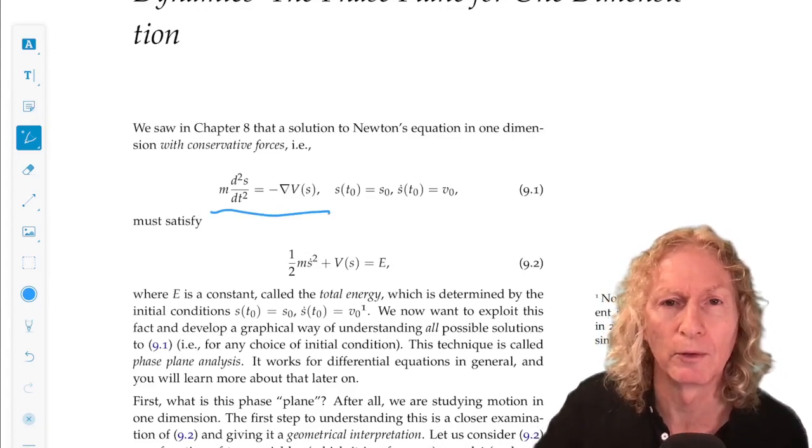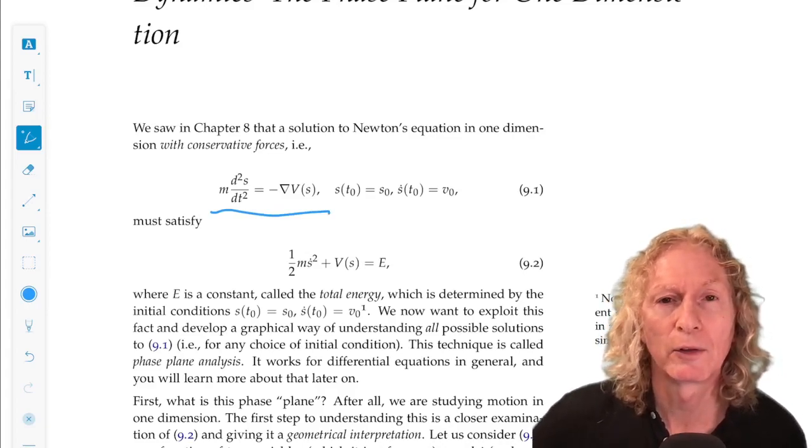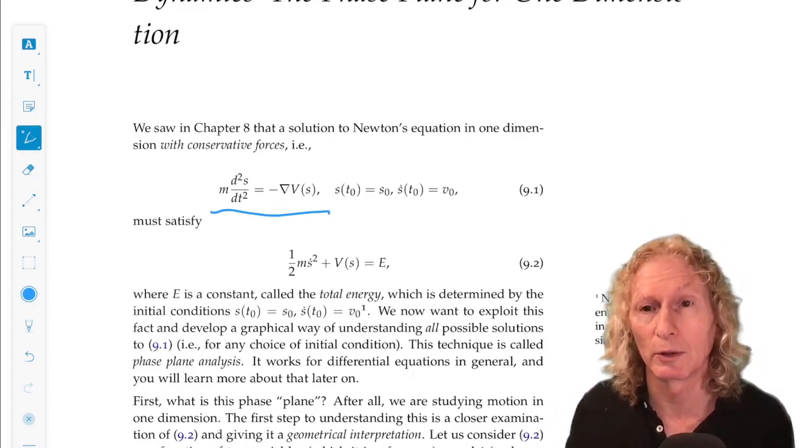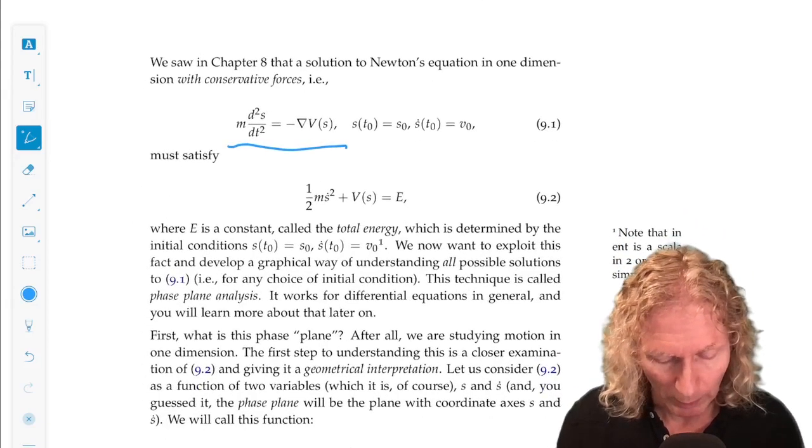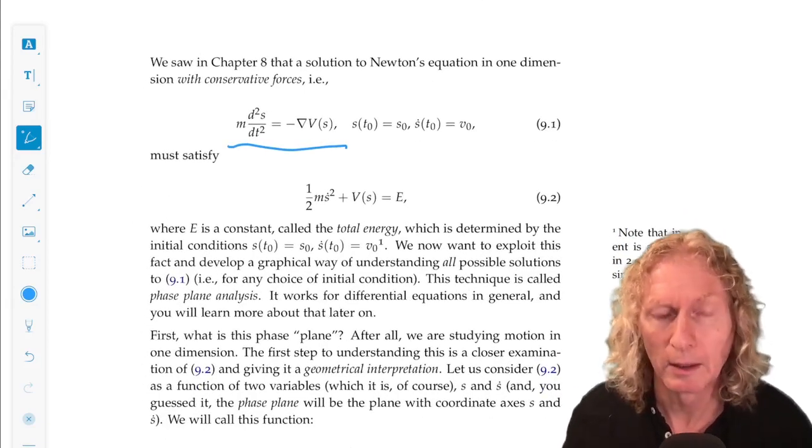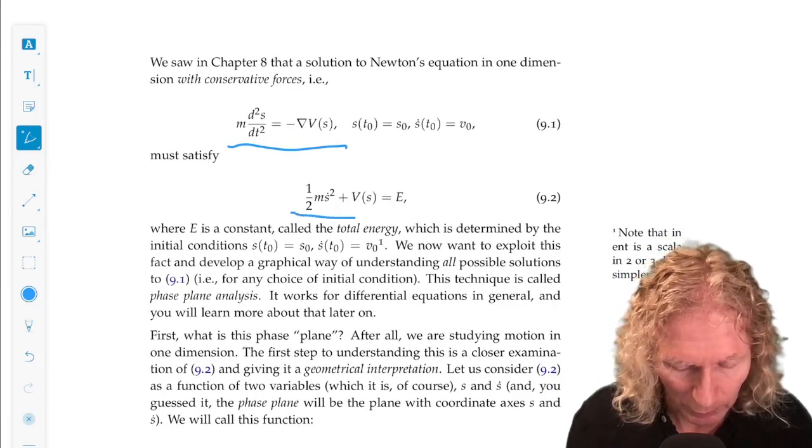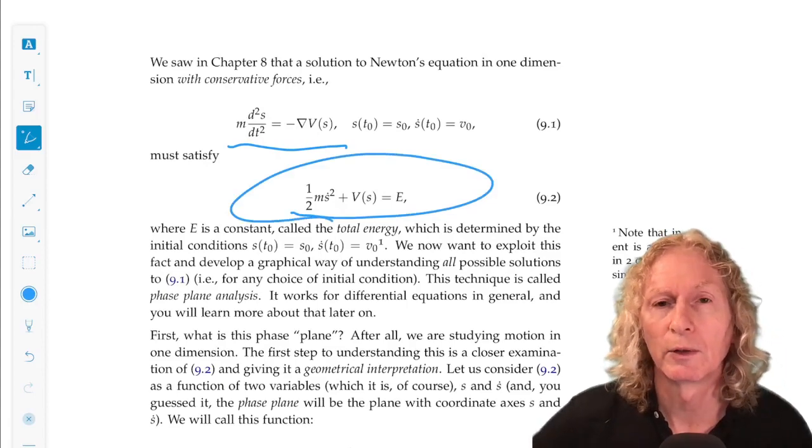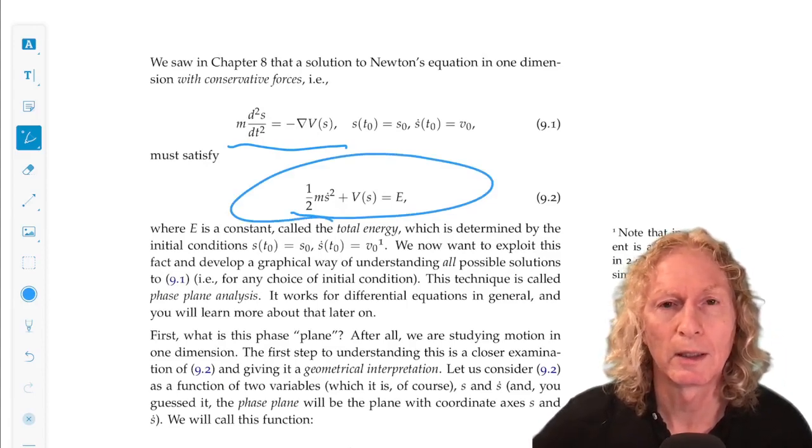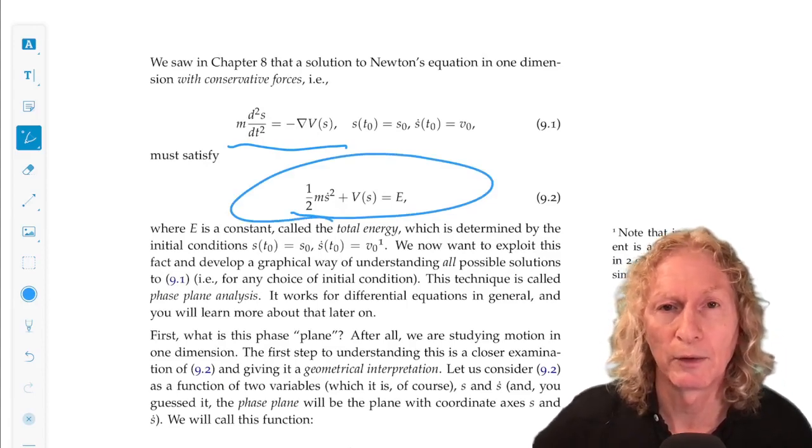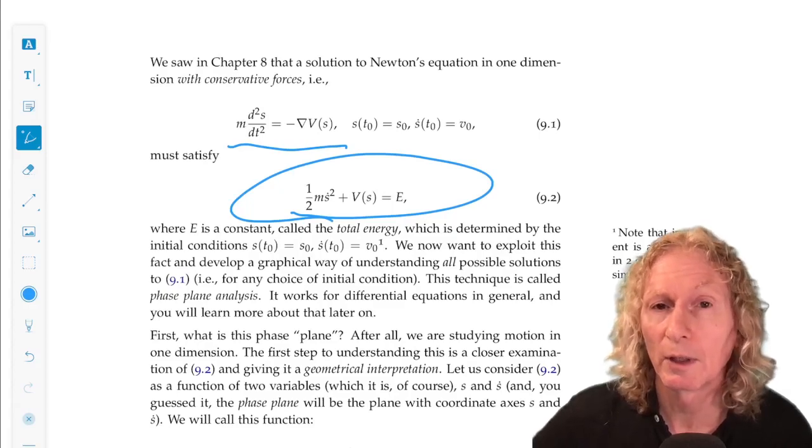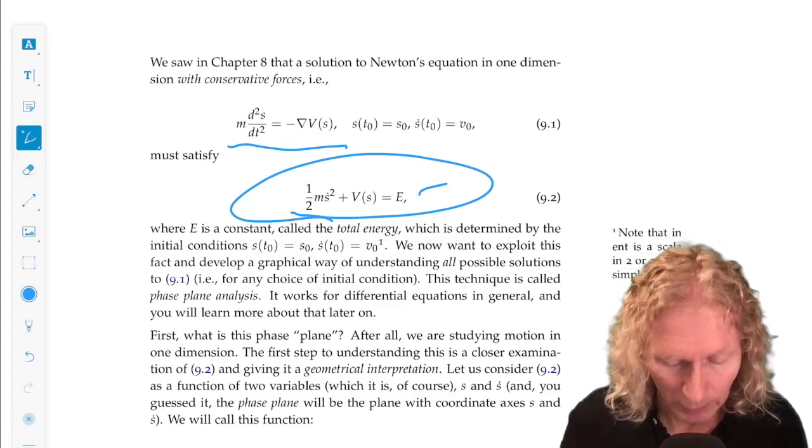So the force is minus the gradient of a scalar valued function, the potential energy. We've already shown that for this situation, the total energy defined in this way is conserved. That is, if we take a solution s of t, s dot of t, it is constant along this function.